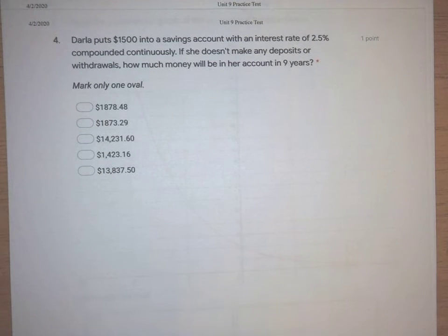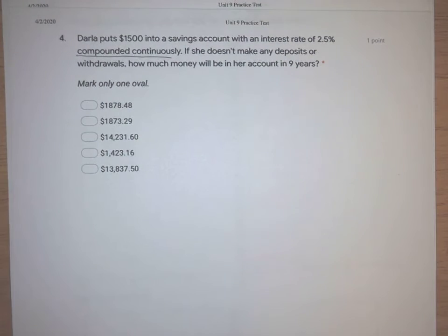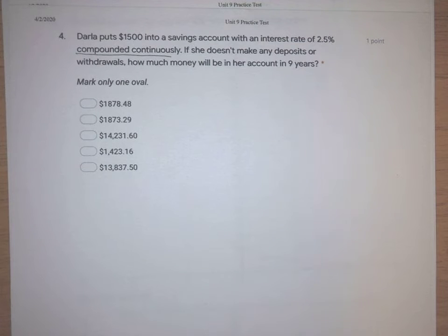In this problem, we need to again find out an amount of money with a compound interest scenario. The key words in this one is compounded continuously. That means it's compounded basically an infinite number of times per year. It's always compounding. There's no intervals here.